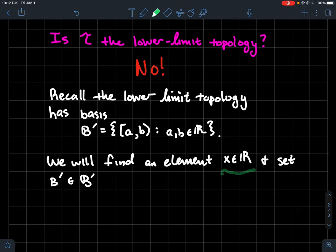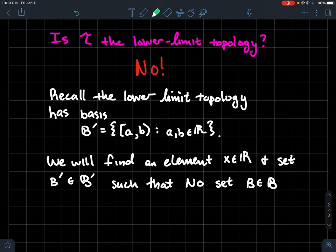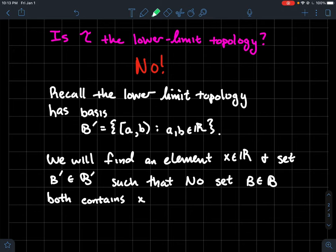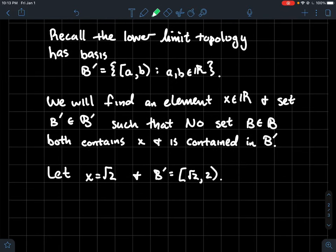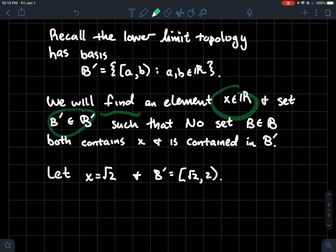To show this, we need to find a real number X and a basis element from the lower limit topology basis such that no basis element from B — with only rational coordinates — both contains X and is contained inside that element. Since one basis uses only rational endpoints, it's natural to play with irrational numbers to reveal the difference.